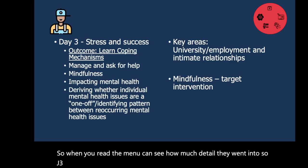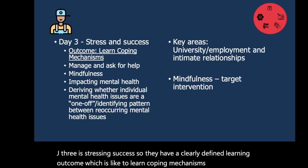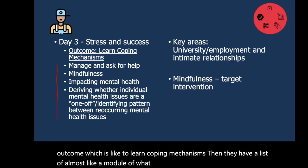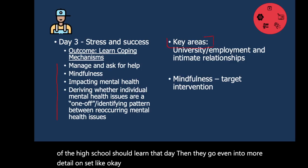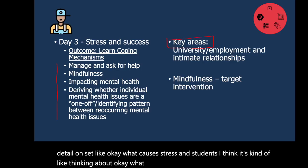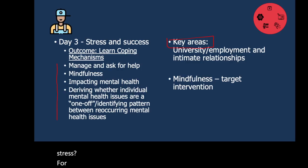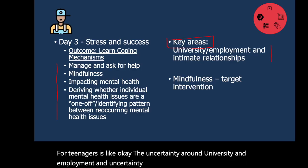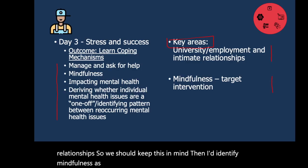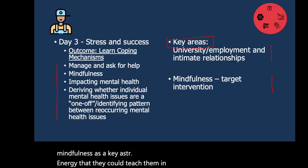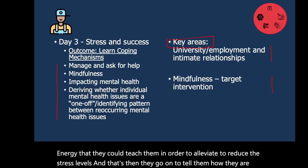Day three is 'stress and success.' They have a clearly defined learning outcome, which is to learn coping mechanisms. Then they have a list — almost like a module — of what the pupils of the high school should learn that day. They go into even more detail asking what causes stress in students: the uncertainty around university and employment, and uncertainty around being able to sustain intimate relationships. They then identify mindfulness as a key strategy to teach them in order to reduce stress levels, and they go on to tell how they are going to teach it. That's the level of detail we need.